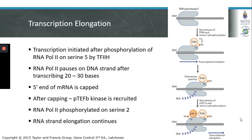We ended the previous lecture by discussing the process of transcription initiation, and now we'll discuss how the RNA polymerase travels along the DNA strand in order to promote transcription of an mRNA. We discussed how transcription factor 2H phosphorylates serine 5 of the RNA polymerase, resulting in initiation of transcription. However, after transcribing the first 20 to 30 bases, the RNA polymerase pauses on the DNA strand.